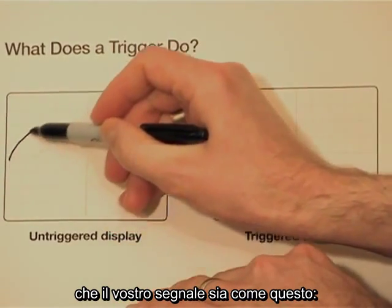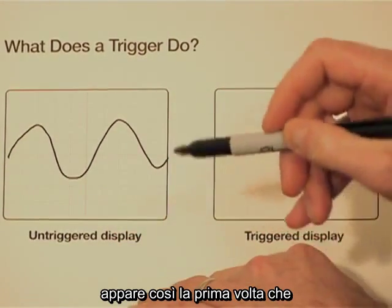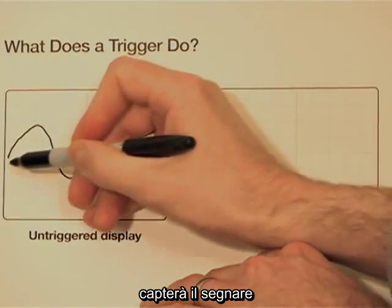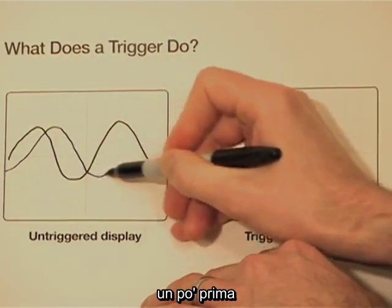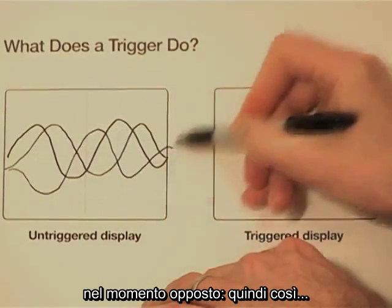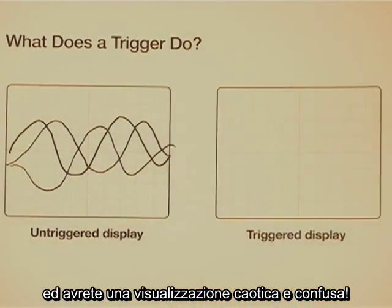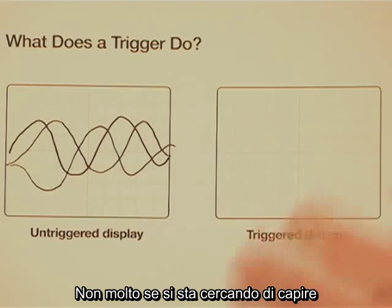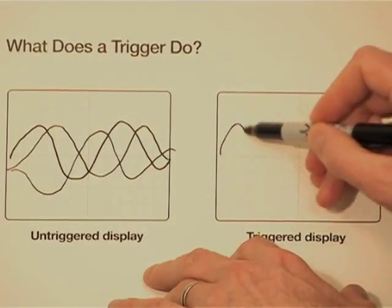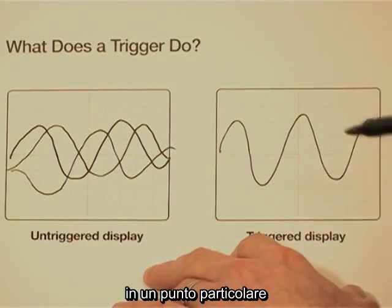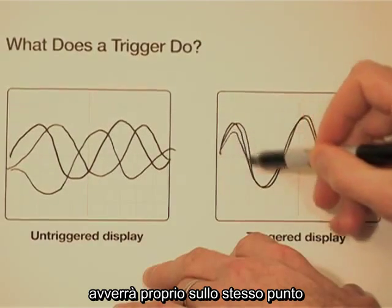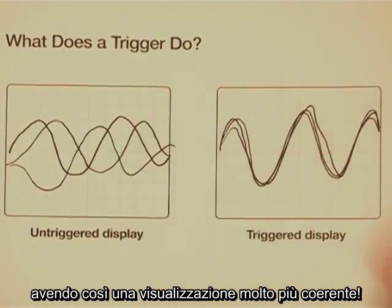For example, imagine your signal looks like this the first time the scope happened to update. The next time it updated, it caught the signal a little earlier — so it looked like that. And another time it updated, it happened to catch it at a completely opposite time — and it looked like that. So you get this chaotic, unfocused display, which isn't too helpful when you're trying to zoom in on what's going wrong in the circuit you're designing. Instead, what you'd like is to start the waveform at some particular point, and then the next time the display updates, you'd like it to update at exactly the same point on the signal, so you get a much more coherent display.